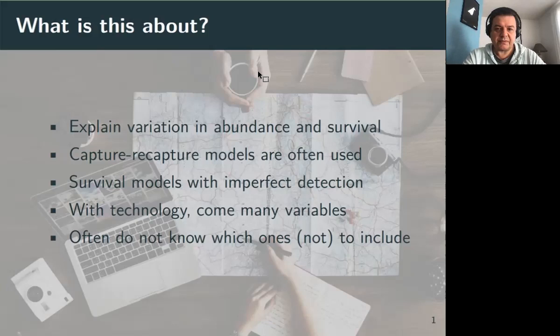The thing is that we struggle more and more with the number of covariates that may explain temporal variation in survival. The number of covariates increases with the use of new technological developments like remote sensing methods and GPS equipment, and we struggle to the extent that we often don't know which covariates to include or not to include in the analysis.